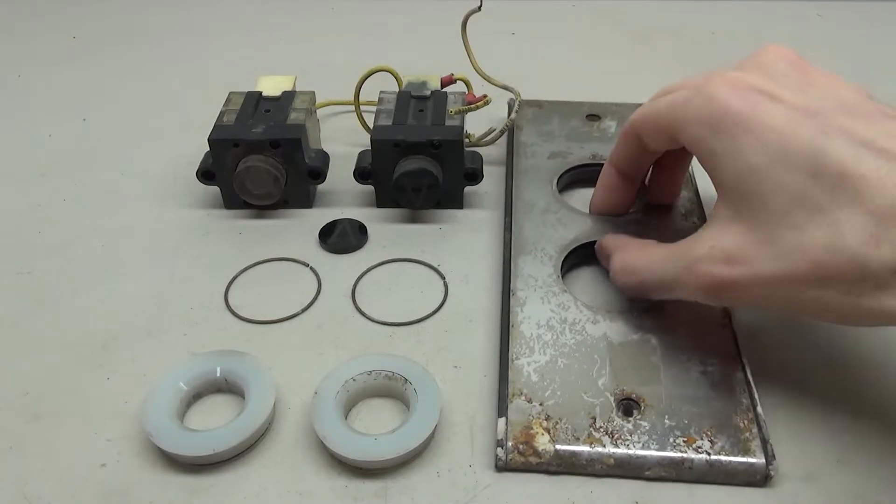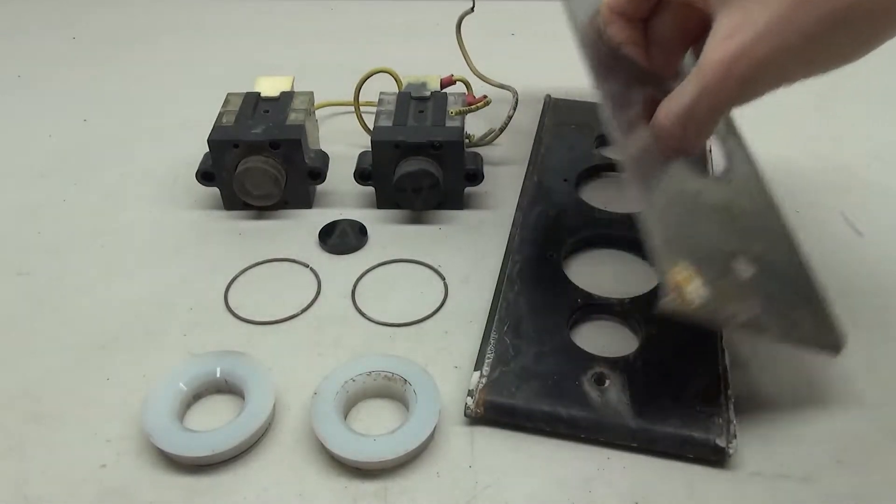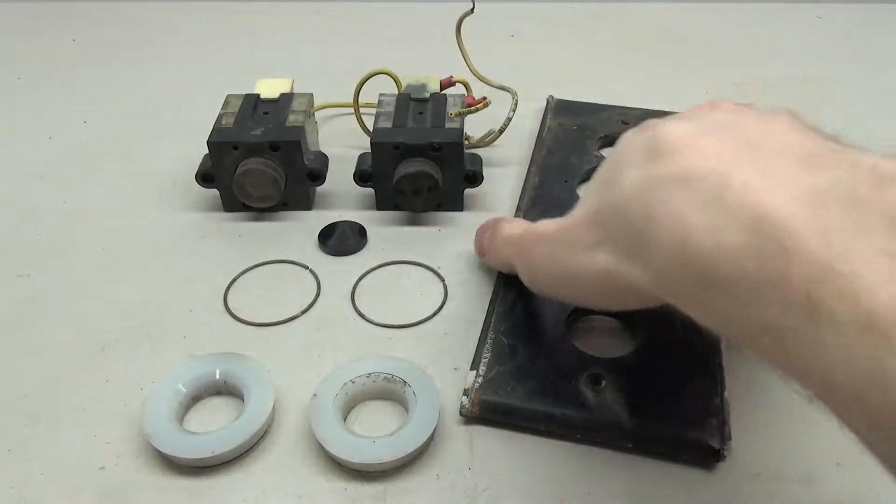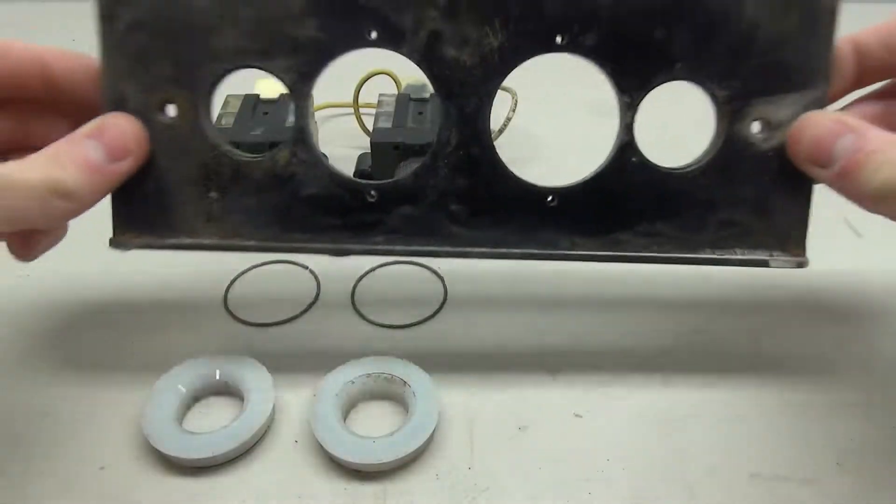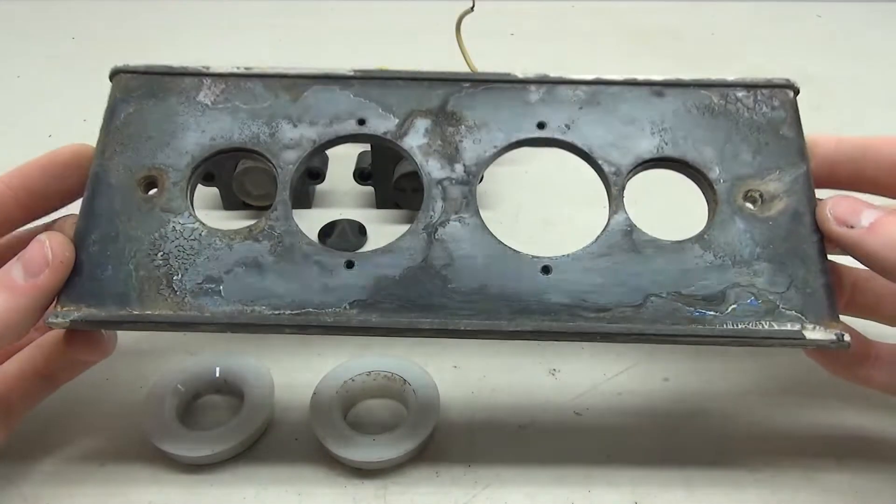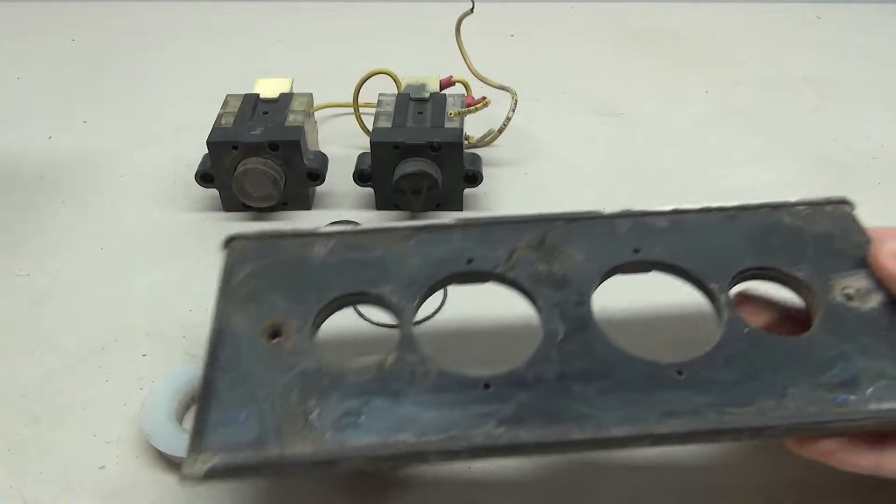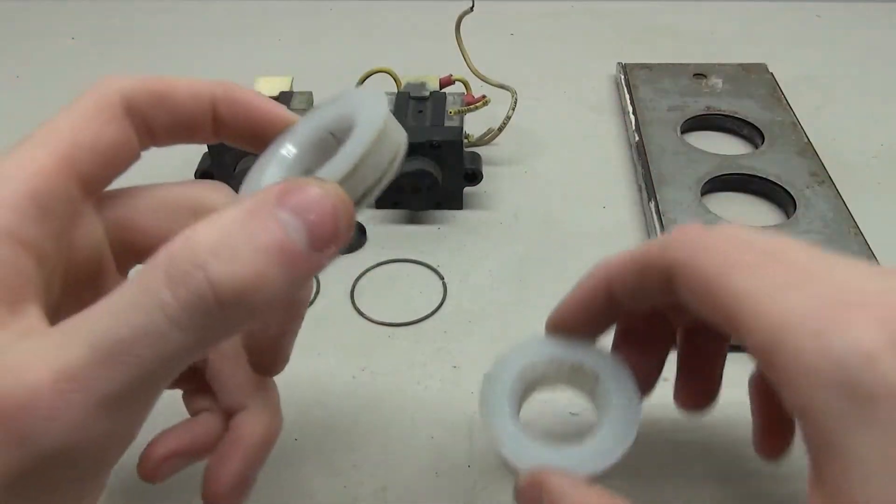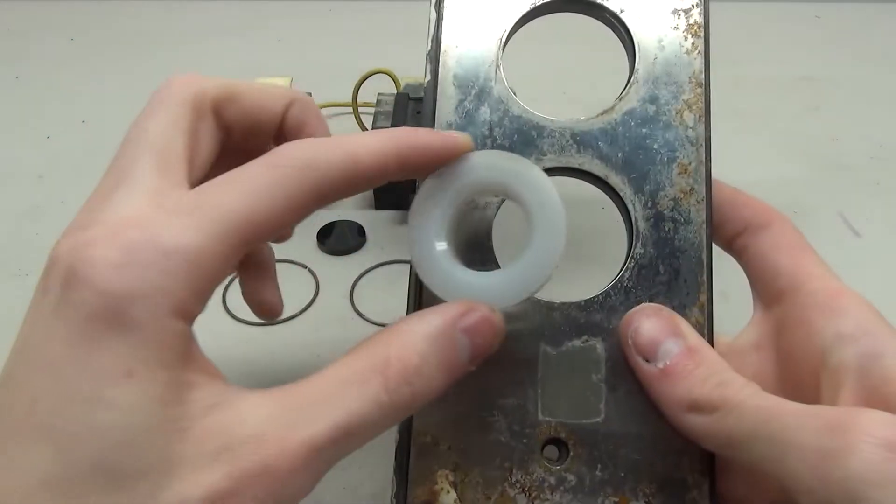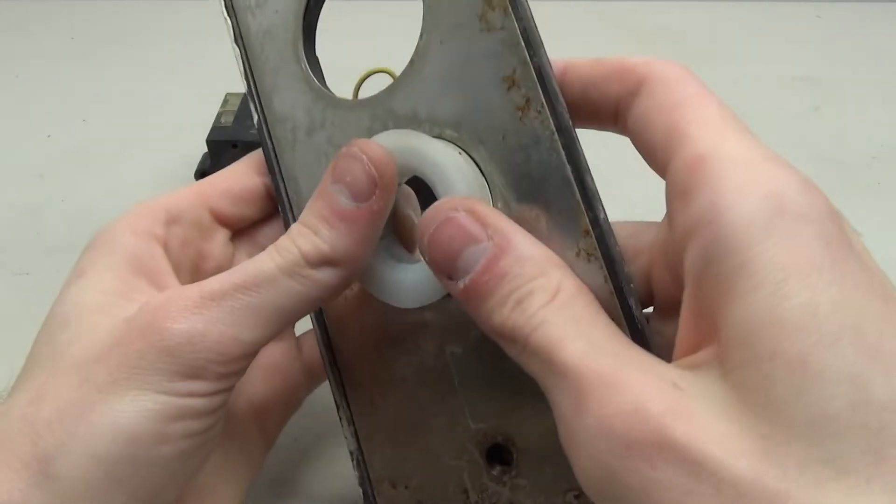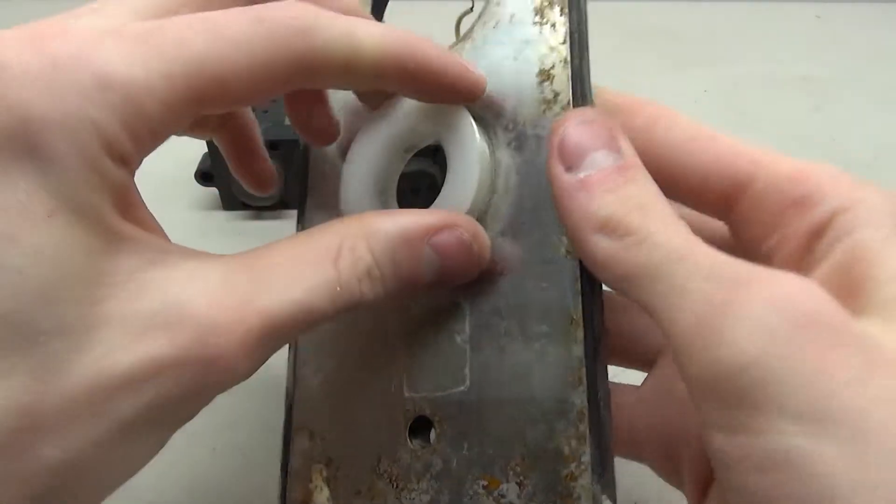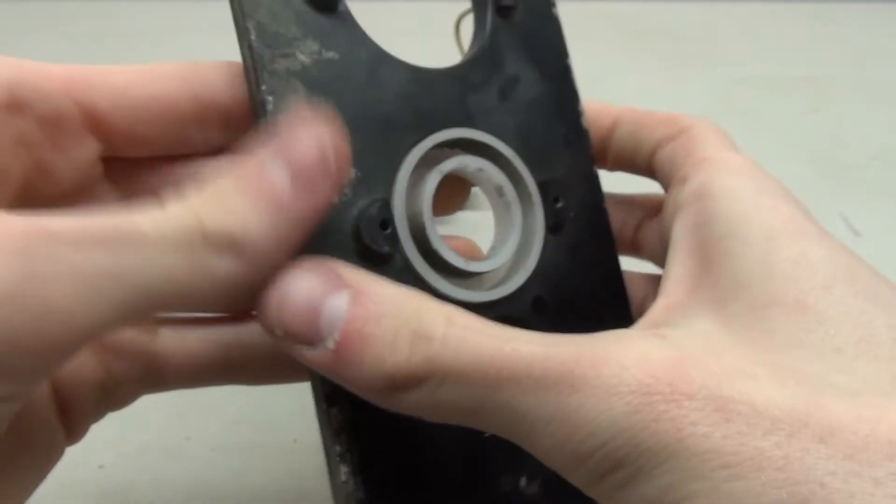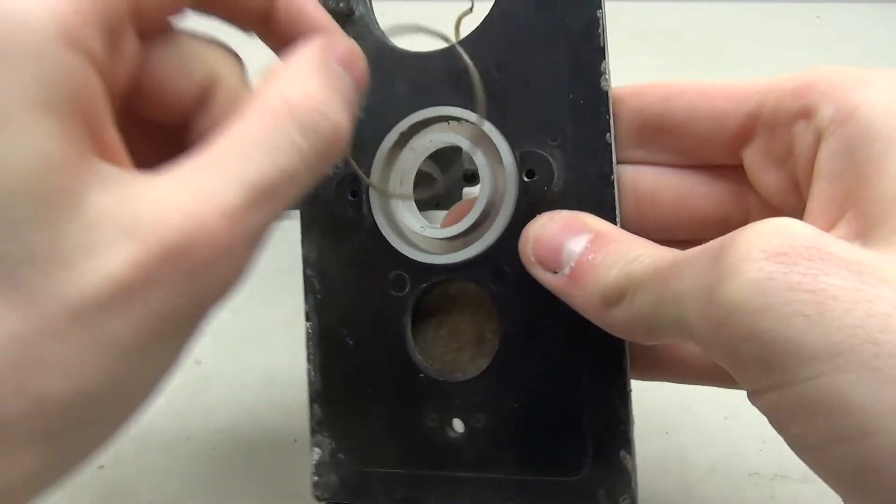This one is in not the greatest shape as you can see here. If we just pull this off, this is the little metal plate, here's the plastic part. This is what holds everything together, this is like your base, and it's kind of gross. This will definitely be interesting to clean up. These little pieces are the little rings that go in here.